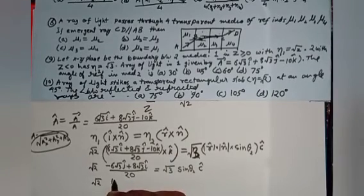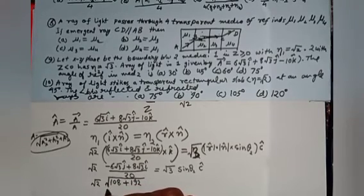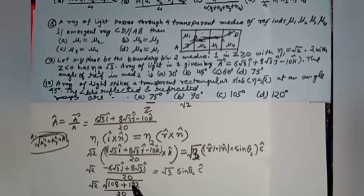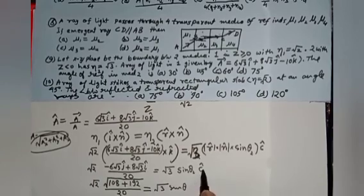Taking the modulus of both sides: the left side gives the square root of 108 plus 192, all divided by 20. Since c-cap is a unit vector its magnitude is 1. Solving this gives sin theta2, from which you can find the angle of refraction. I am not telling you the final answer — that is all for you to complete.